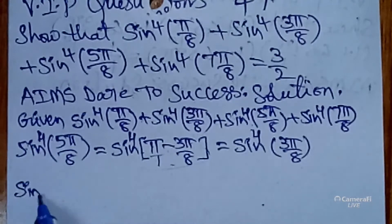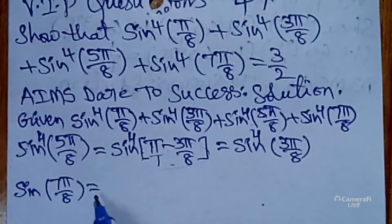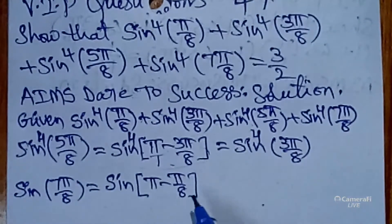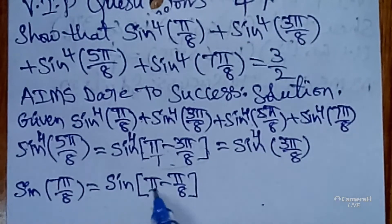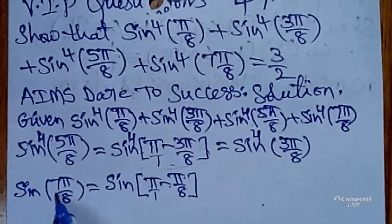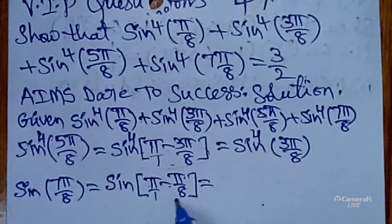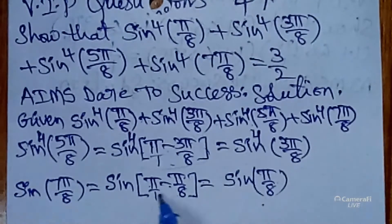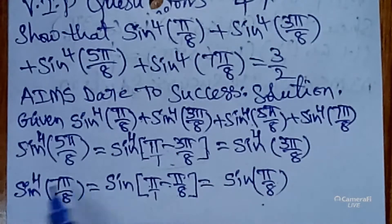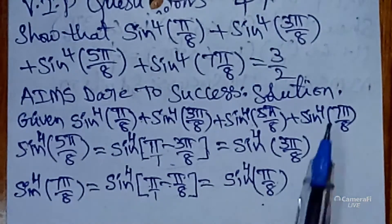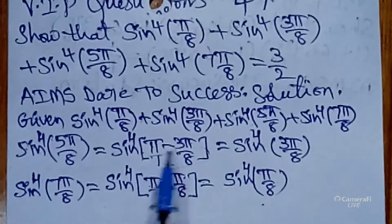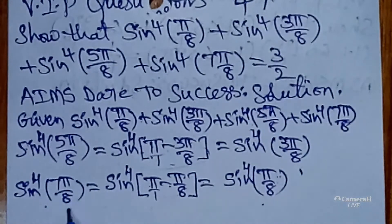Similarly, sin(7π/8) = sin(π − π/8). The LCM is 8: 8π/8 − π/8 = 7π/8. This is in the form sin(180° − θ) = sin θ, so sin(π − π/8) = sin(π/8). Therefore sin⁴(7π/8) = sin⁴(π/8). In short: sin⁴(5π/8) = sin⁴(3π/8) and sin⁴(7π/8) = sin⁴(π/8).